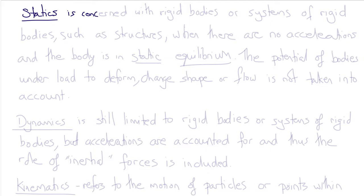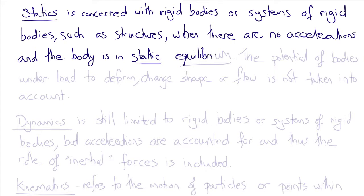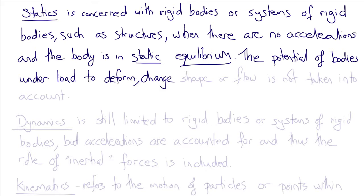Statics is concerned with rigid bodies or systems of rigid bodies, such as structures, where there are no accelerations and the body is therefore said to be in static equilibrium. The potential of these bodies to deform or change shape under load, or to flow, is not taken into account — that's what we mean by rigid. Therefore, the properties of the particular material are not considered, just how forces get distributed between the components of the body based on the laws of mechanics, under the assumption that the body is in equilibrium.